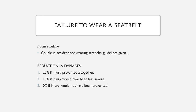You can use contributory negligence in various circumstances. A big one is failure to wear a seatbelt. In Froom v Butcher, there was a couple in an accident, neither wearing seatbelts. The injuries they suffered were of different ranges — some would have been prevented, some would have been less serious, some would have occurred anyway. This case provides guidelines still used today: if the injury would have been prevented altogether, reduction is 25%; if it would have been less severe, 10%; if it wouldn't have been prevented at all, 0%.